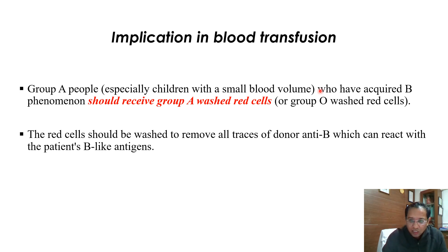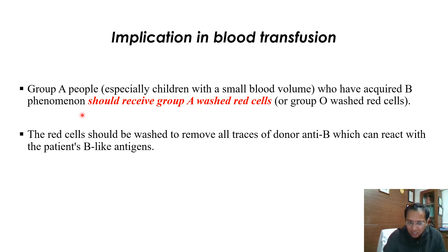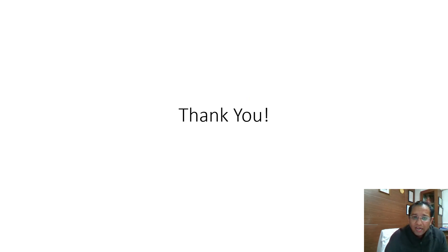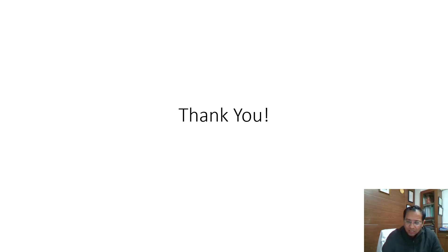What is the implication for blood transfusion? Group A people who have this acquired B antigen should receive group A washed red cells. The red cells must be washed to remove all traces of donor anti-B, which can react with the patient's B-like antigen. This is all about acquired B phenomenon. If you have any doubts or anything to discuss, feel free to write in the comments and we will be happy to answer. Thank you so much.